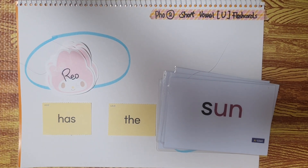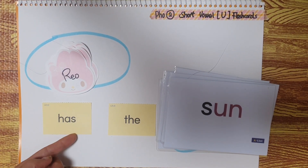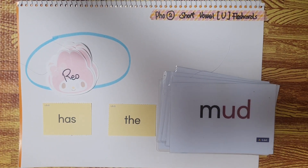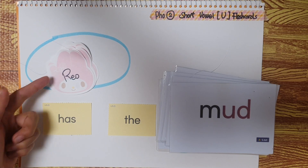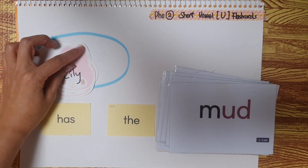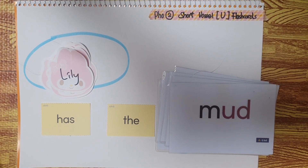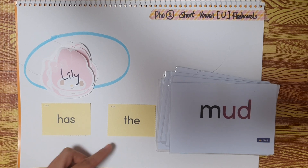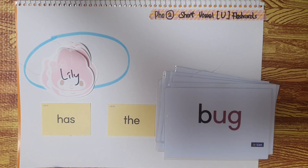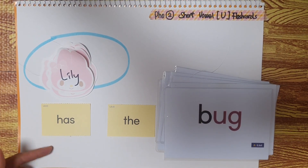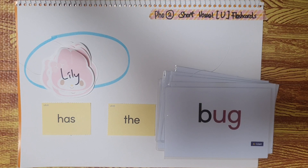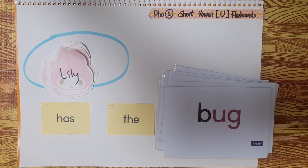Rio has the mud. Rio has the mud. Lily has the bug. Lily has the bug. This is how you do it. Bye-bye.